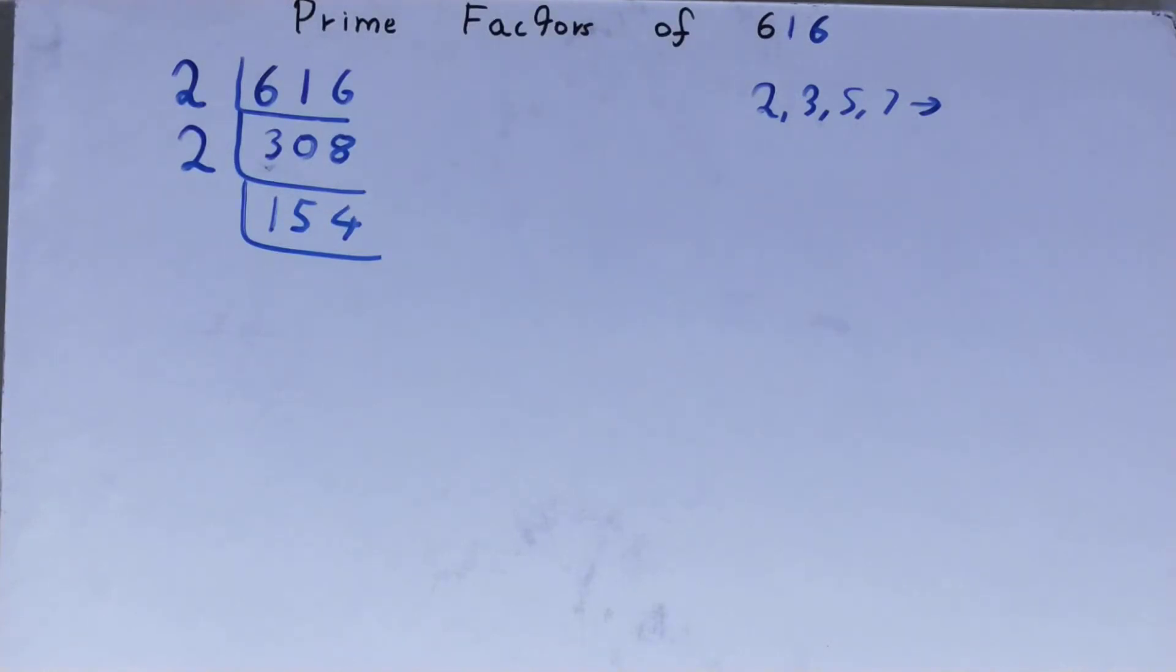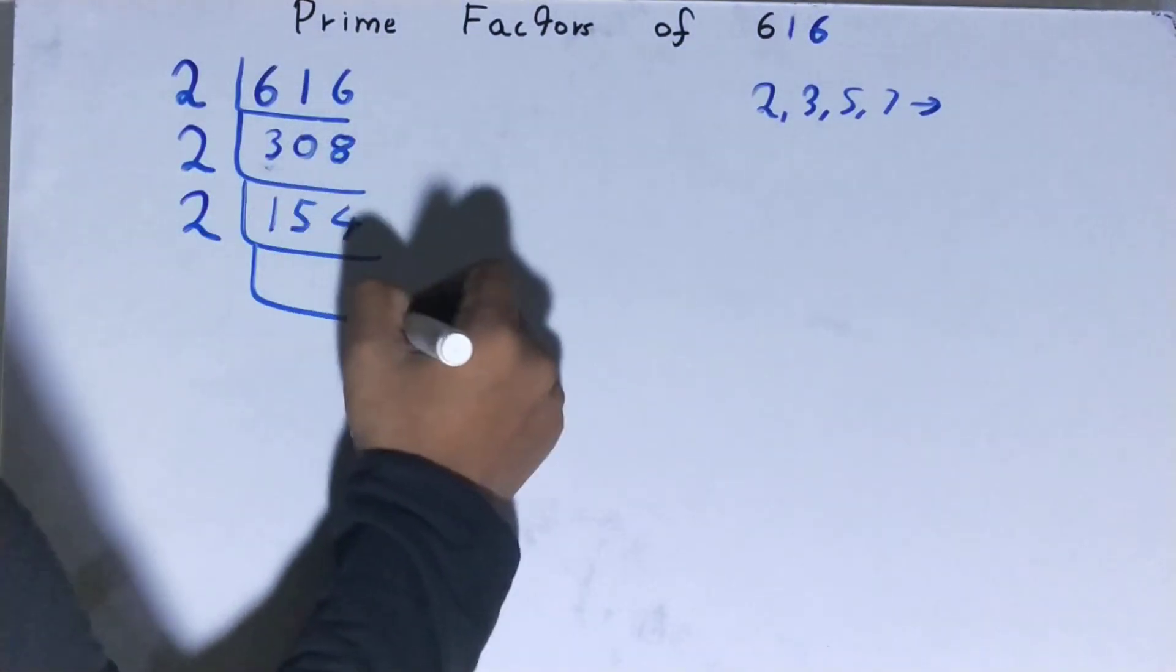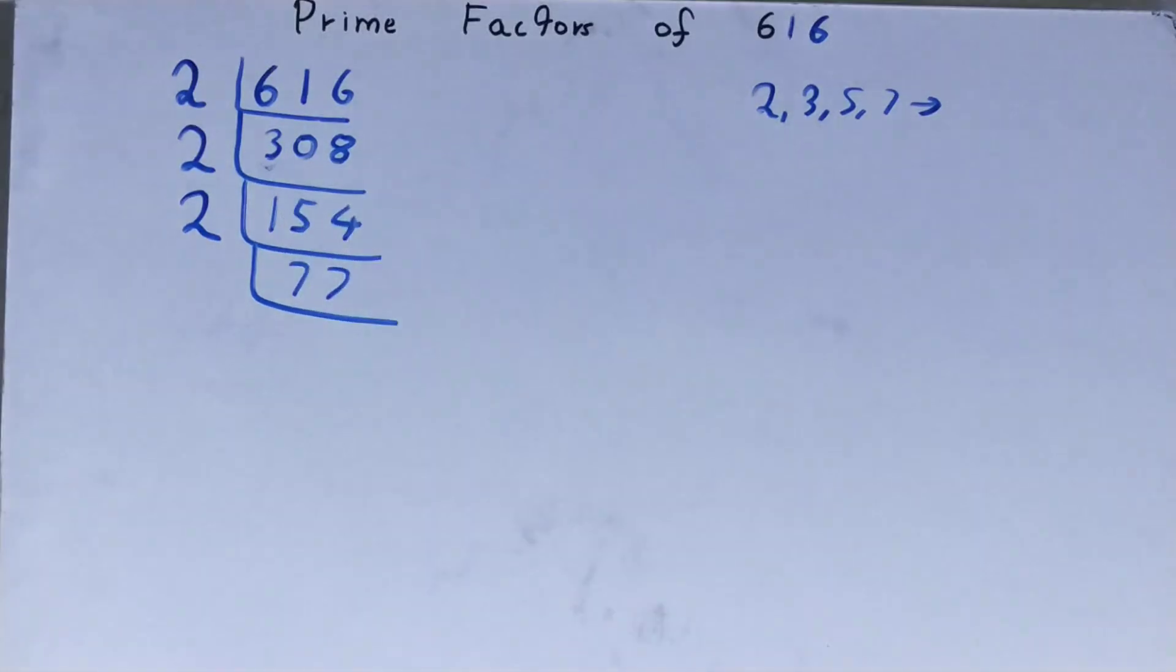The answer is again yes. So divide it and you will be left with 77. Now, 77 is further not divisible by 2 because it is an odd number.